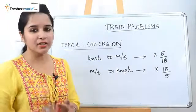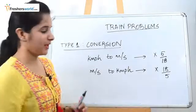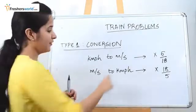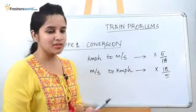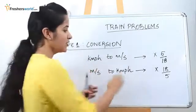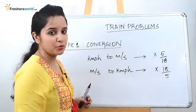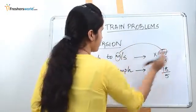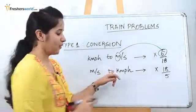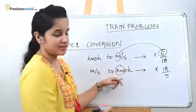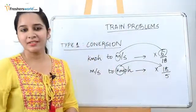People get confused by 5/18 and 18/5, but there is a simple way to remember. If your answer has to be in meters per second — meter is the smallest form when compared to kilometer — always remember if it is meter, the smallest number 5 will be on your numerator. Kilometer is the highest form when compared to meter, so when you have kilometer in your answer you will have the highest numerator, which is 18/5. Simple to remember, right?